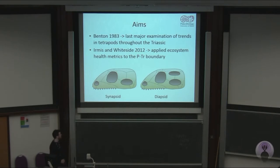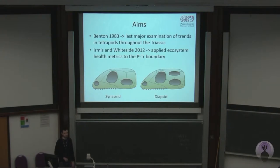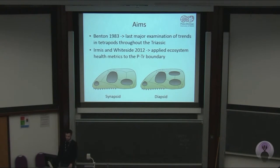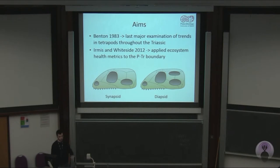Key aims were to explore the trends in synapsids and diapsids, and the origination of dinosaurs — a subclass of diapsids — and also to look at recovery trends from the end-Permian mass extinction and the wider turnovers throughout the Triassic.